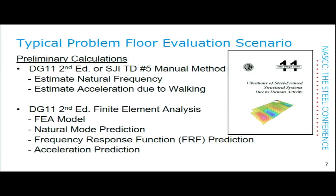For preliminary calculations, we can go to AISC Design Guide 11, now in its second edition, published a little less than two years ago. The manual method allows us to estimate the natural frequency of the floor and also estimate the acceleration due to walking. The manual method only applies to what are called regular bays — that is, rectangular bays — and it works best if the surrounding areas are also regular bays. If that's not the case, there is a method in Design Guide 11 second edition on how to use the finite element method to evaluate a floor.